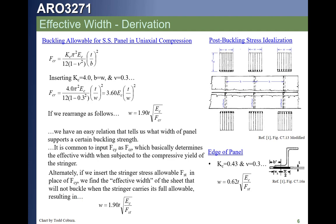For the edge of a panel we have three simply supported edges and one free edge. Looking that up gives a buckling coefficient of 0.43. Plugging that into the upper-left equation gives this variant: w = 0.62t × √(E_c / f_st), where f_st can be the stringer compression allowable, f_cr from the Euler buckling equation, or f_cy as an approximation. Being at the edge of the panel gives a different coefficient and therefore a different equation.